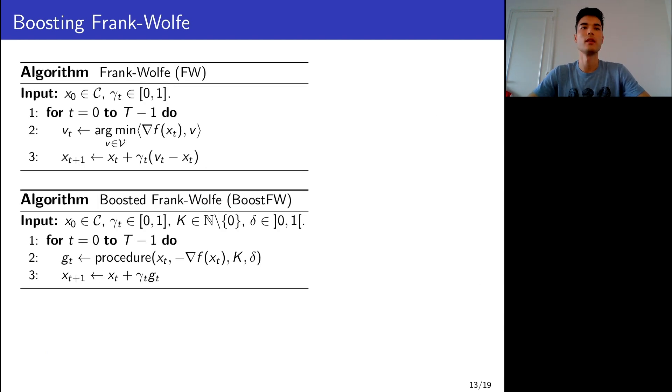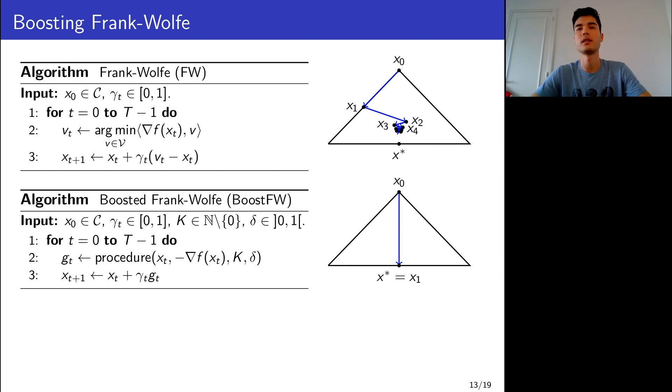We can write the Boosted Frank-Wolfe algorithm in the following compact way. If we compare to Frank-Wolfe, we have replaced the linear minimization with this alignment procedure. Then we update our point with a step size between 0 and 1 to ensure feasibility. Now, if we go back to our triangular experiment, remember that Frank-Wolfe had this very inefficient zigzagging behavior, whereas Boosted Frank-Wolfe can converge in just one iteration. Of course, it's because here the setting is very simple.